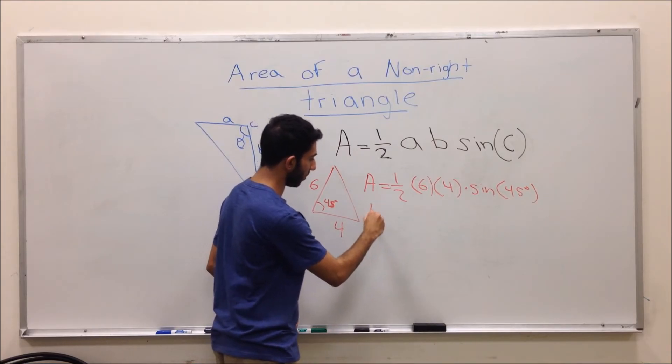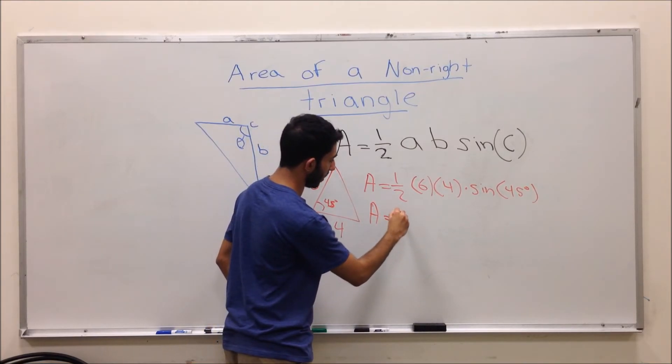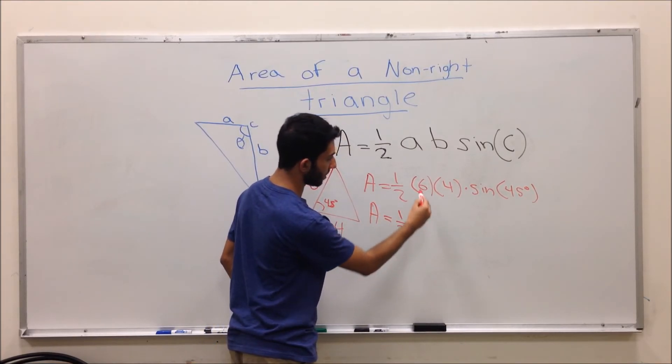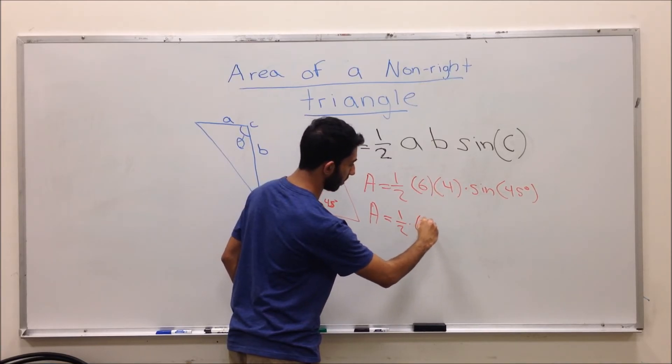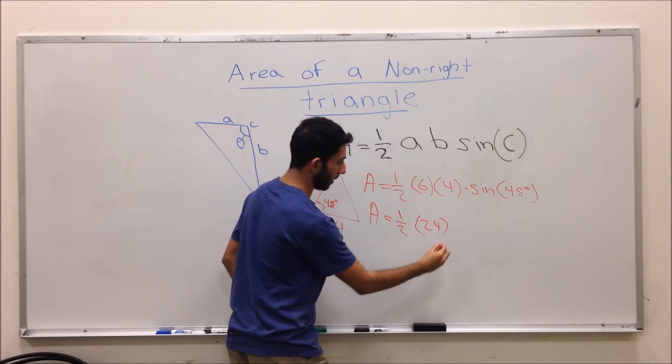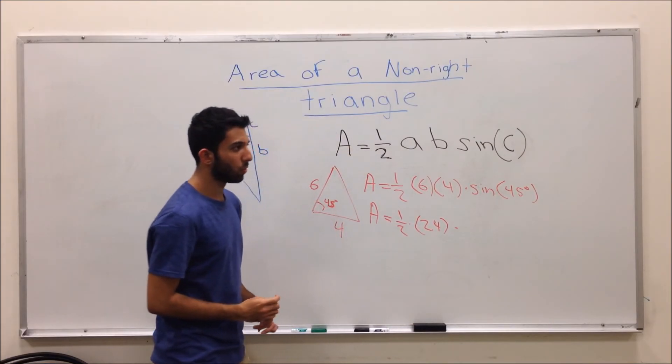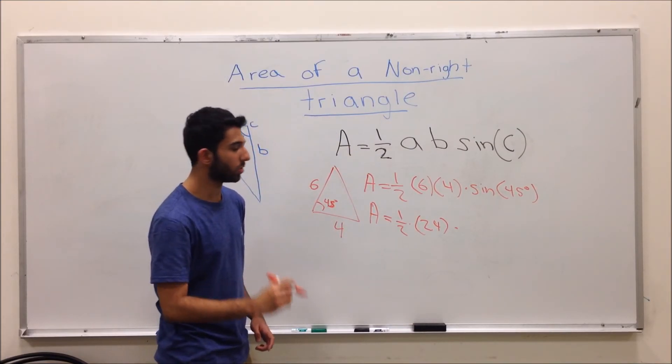And now you will just simply solve. One-half times 6 times 4 is 24. And sine of 45, when memorized, is radical 2 over 2.